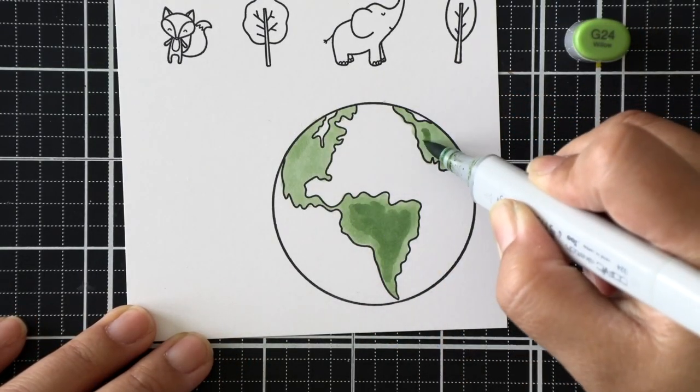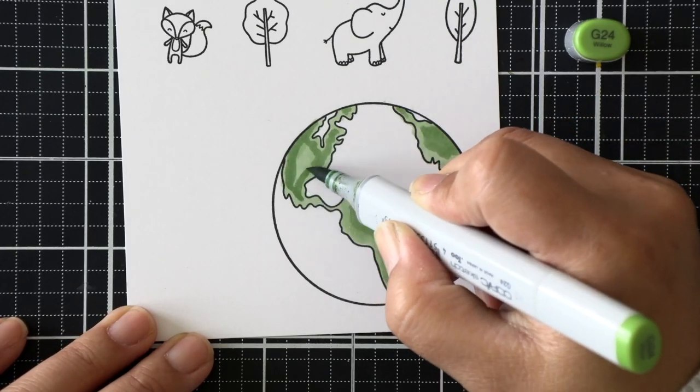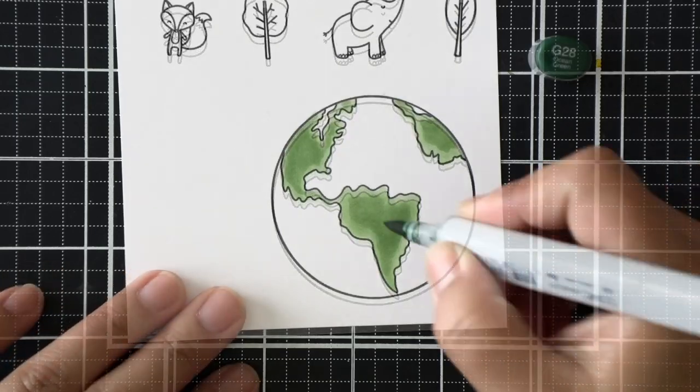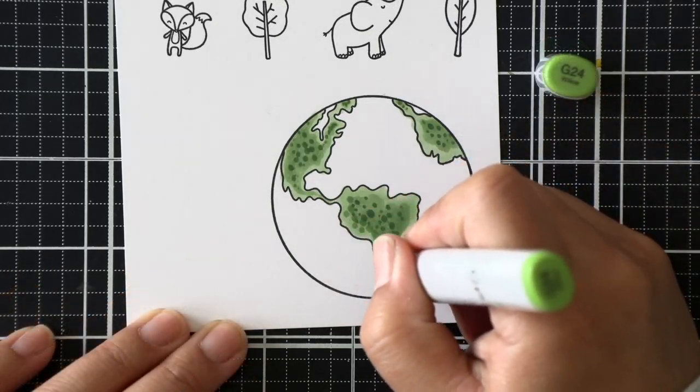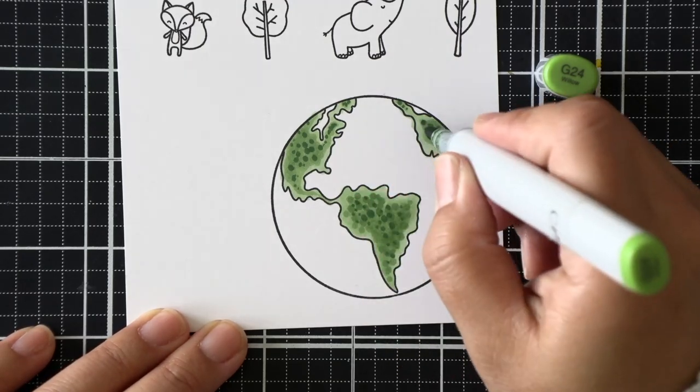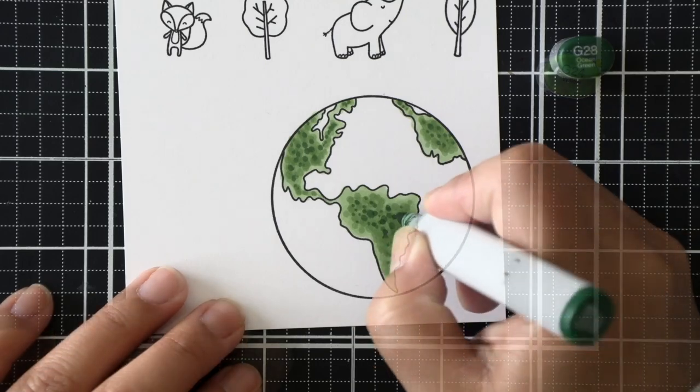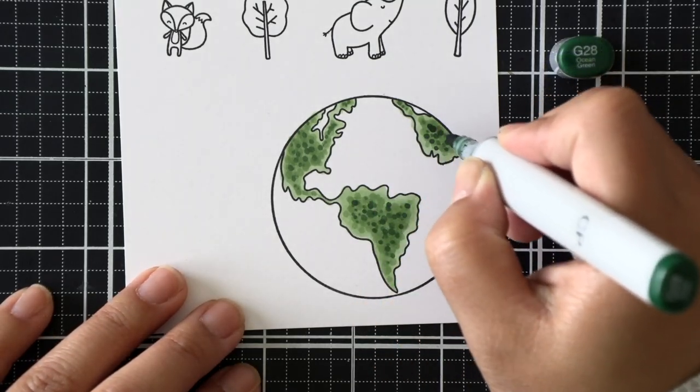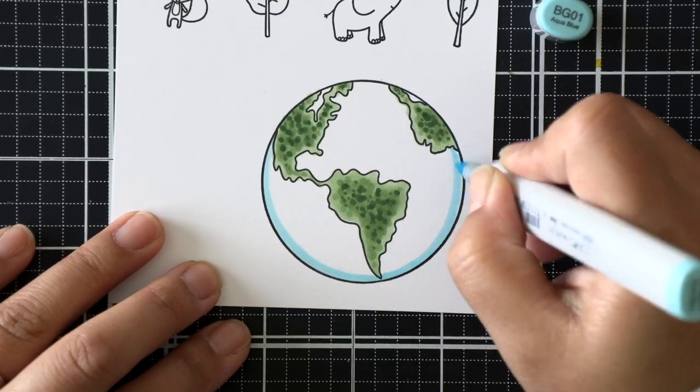What I'm doing is flooding the entire land portions of the globe first with a light green, and then going in with a medium green to kind of shade in just the center portion. So we're kind of coloring backwards here. I'm dotting with the darkest green to create that texture, and then I'm going to go back and forth between the medium and the dark to kind of dot and create more of that texturized look on the land portions of this globe.